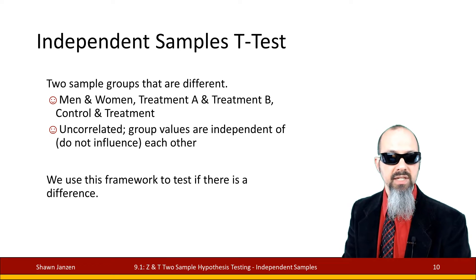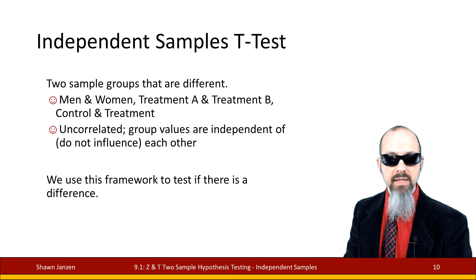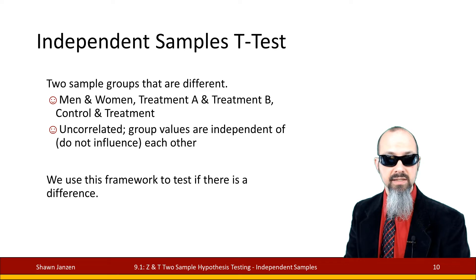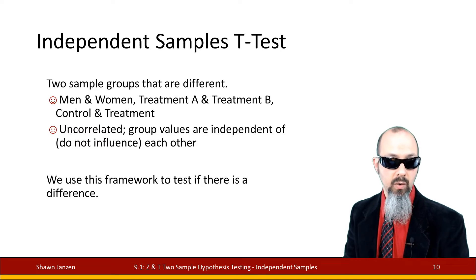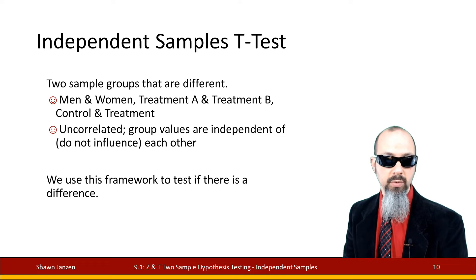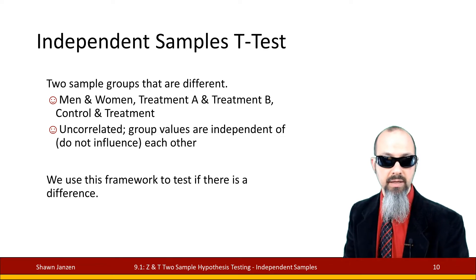With the independent samples T-test, the groups are different — examples include men and women, treatment A or treatment B, or a control group and a treatment group. We assume these groups are uncorrelated: the values in one group aren't going to be affecting the values of the second group. They're independent, and we use this framework to figure out if there's a difference.